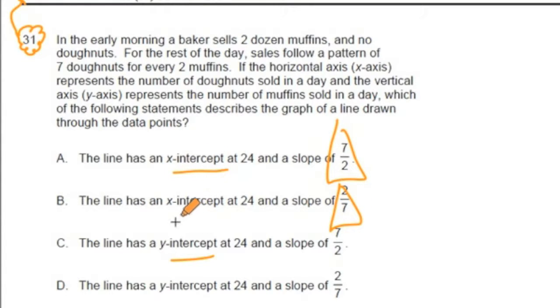So we're going to have to make a decision if we're dealing with x or y-intercepts or a slope of 7 over 2 or 2 over 7.